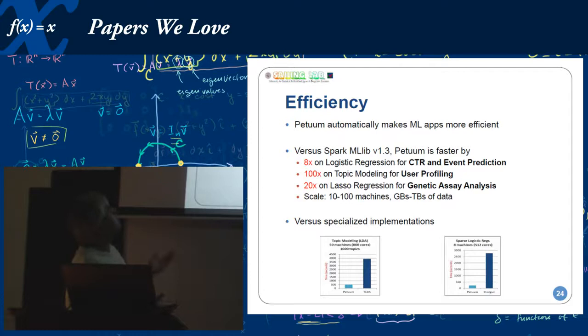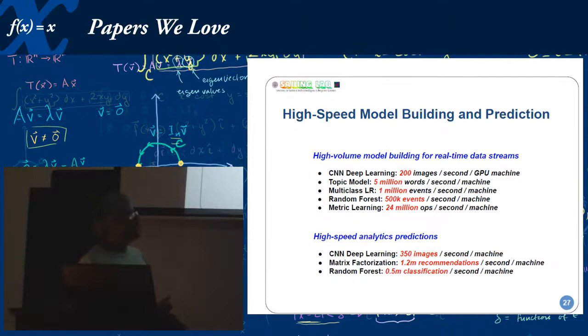Efficiency. So this is where since they're talking about how many machines they're using, it's 20 times faster using LASSO regression for assay analyses. These graphs actually show it more nicely. This is Petuum versus BLDA. Petuum versus Shotgun. Shotgun is a LASSO regression algorithm, it's one expression of it. So high speed model building and prediction. This is what has managed to do 200 images per second on the GPU machine. I mean it sounds pretty fast to me because I couldn't go through 200 images in a second, but I don't have anything to compare it to. But this is what they're pushing, and if they're going on the record I'll take their word for it.